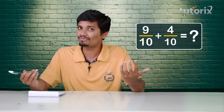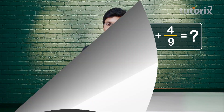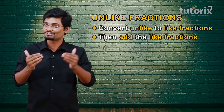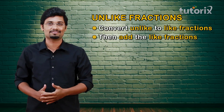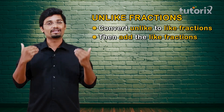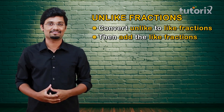But what if the denominators are different? Well, that is also pretty easy. To add unlike fractions, we first have to convert unlike fractions to like fractions. Once we do that, we can simply add those like fractions.